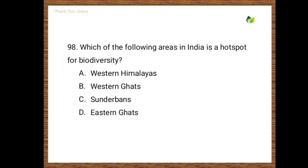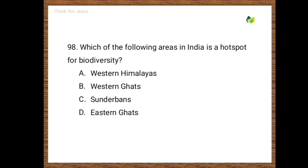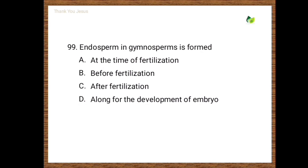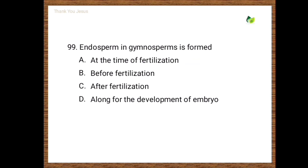Next question: Which of the following areas in India is a hotspot for biodiversity — Western Himalayas, Western Ghats, Sundarbans, Eastern Ghats? The correct option is Western Ghats. Next question: Endosperm in gymnosperms is formed — at the time of fertilization, before fertilization, after fertilization, along with development of embryo. The correct option is before fertilization.